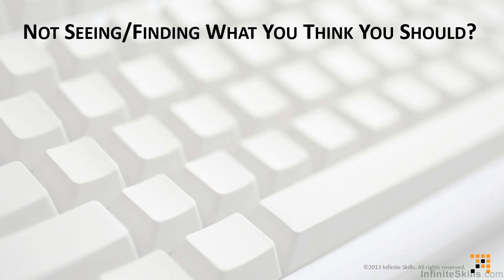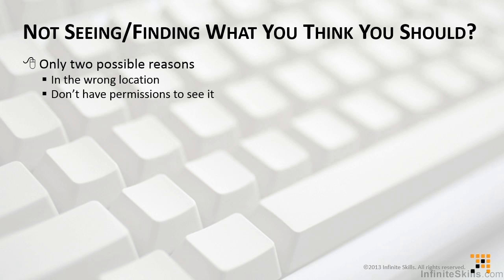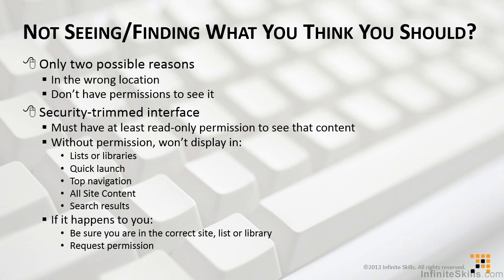The list or the library that you're supposed to be accessing — the good news is, there are only two reasons that could happen in SharePoint: either you're in the wrong place, or you don't have permissions to see it. This is due to a feature called the Security Trimmed Interface. Very simply, you must have at least read-only permissions to see content. Without permissions, it won't display in lists or libraries, the quick launch, the top navigation, all-site content, or even in search results. This is actually a good thing, because it means your view in SharePoint won't be cluttered with things you can't access.